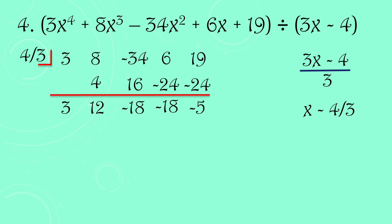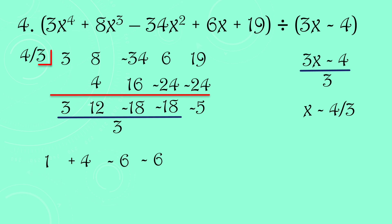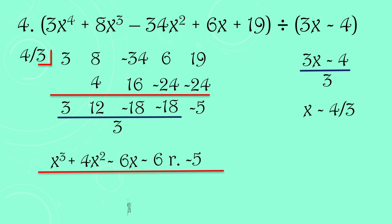Since we divided by 3 earlier, we now divide the quotient coefficients by 3: 3 ÷ 3 = 1, 12 ÷ 3 = 4, −18 ÷ 3 = −6, −18 ÷ 3 = −6. The dividend degree is 4, so quotient degree is 3. Our answer is x³ + 4x² − 6x − 6 remainder −5, or simply x³ + 4x² − 6x − 6 − 5/(3x − 4). That's how simple it is to divide polynomials using synthetic division.